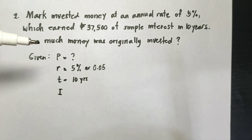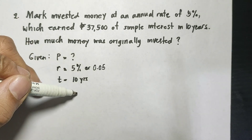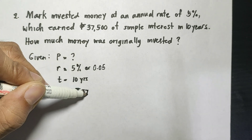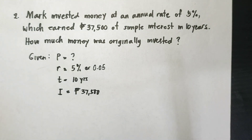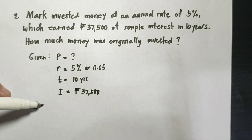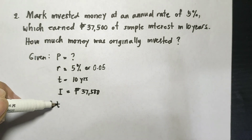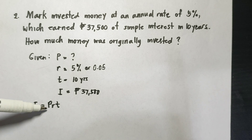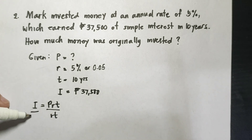There is also a given value for the interest which is 37,500 pesos. Let us now derive a formula from I equals P times R times T and solve for P by dividing both sides by R times T.